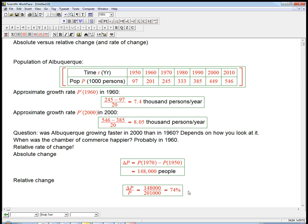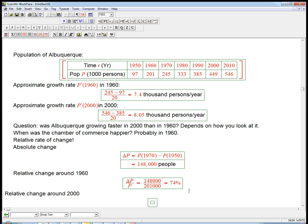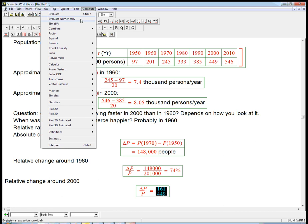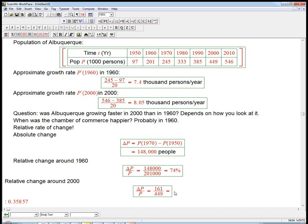So what about the relative change here? That's the relative change around 1960. And the relative change around 2000 would again be a different value of delta P over P. That's going to be 161,000 people divided by the 449, that's around the 2000 value. That's only about 36%. So that's an absolute change or a relative change—do you divide by the quantity or not.